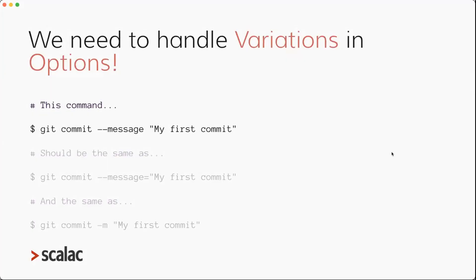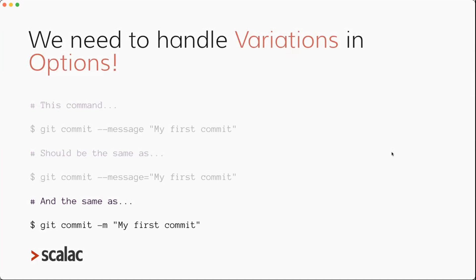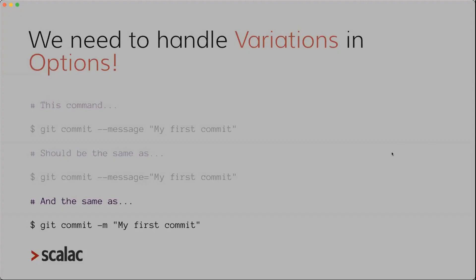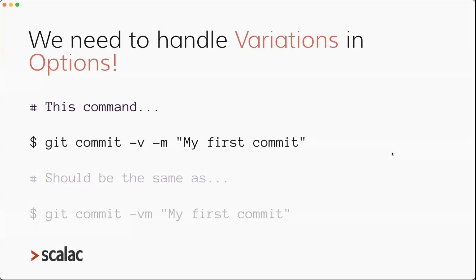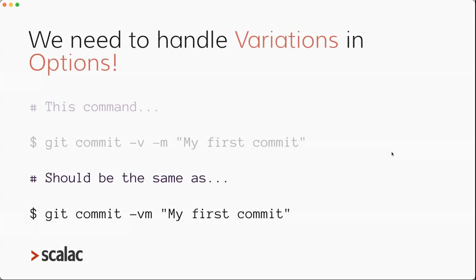We also need to handle variations. For example, providing a message option with the value separated by space should be the same as separating the value by the equals sign, and it should also be the same as providing a short version of the option — just 'M' instead of 'message'. I need to be able to handle all of those variations. Also, if I have a command with several short options, I should be able to group them together, and that will also be recognized by the application.